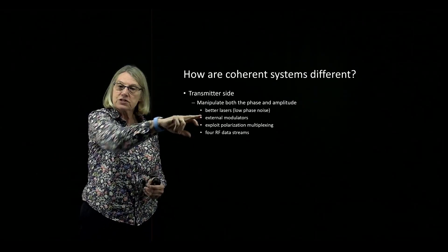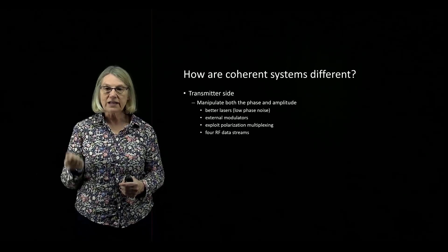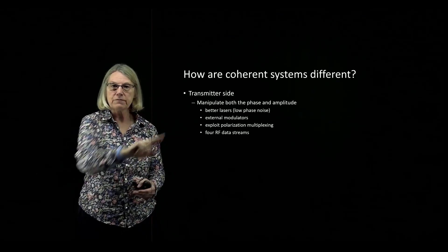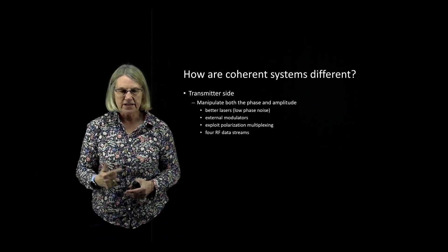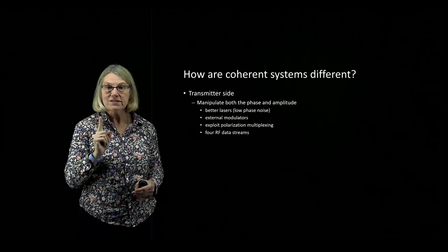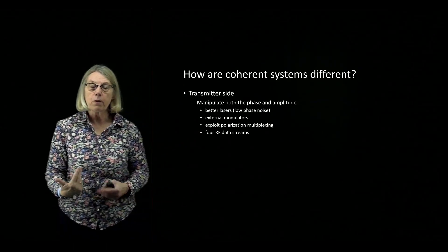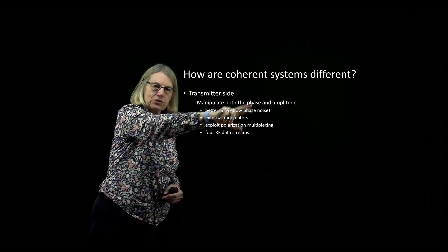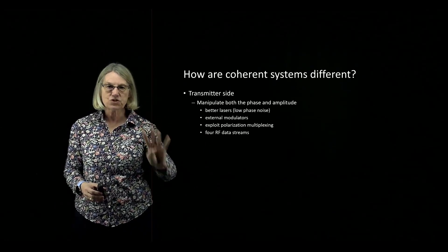I'm also going to have to use external modulators. If I'm going to modulate phase, I can't do that by turning a laser on and off — directly modulated lasers are no longer an option. I have to move to external modulators, and it's got to be an external modulator that modulates phase, not just amplitude. I also want to exploit polarization, so I need components on the transmitter side that allow polarization multiplexing. This strategy of modulating amplitude and phase means I'm going to have to manage four RF data streams instead of one.